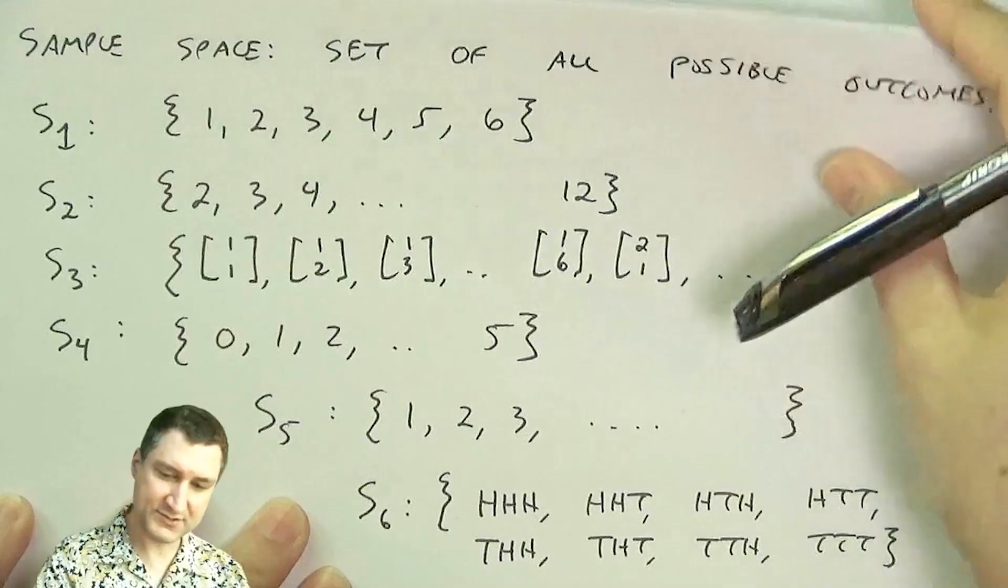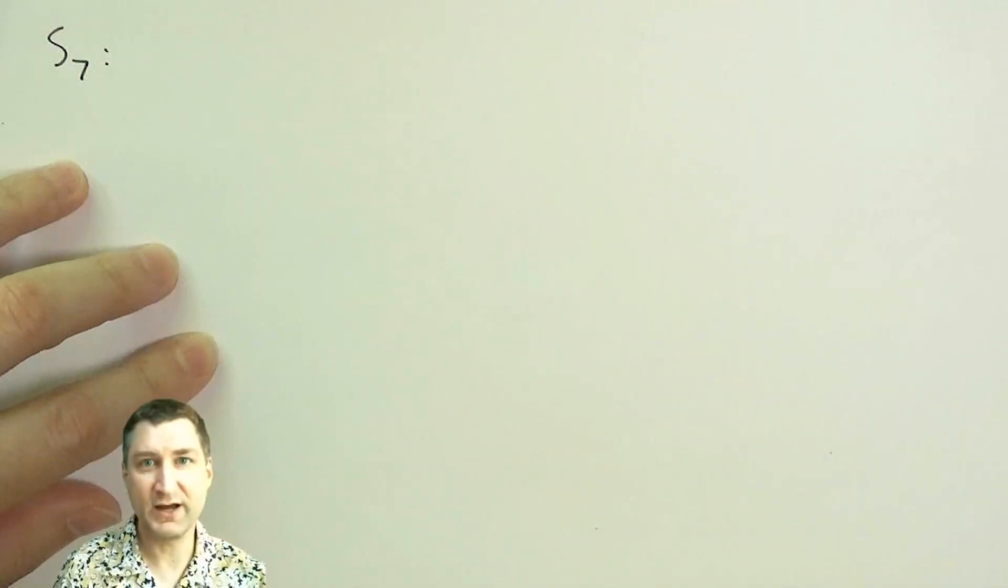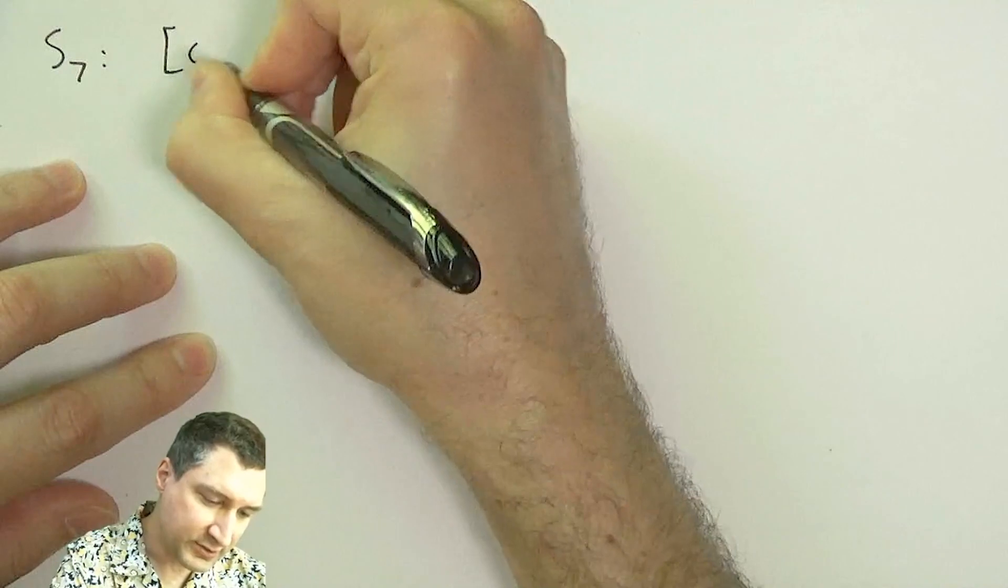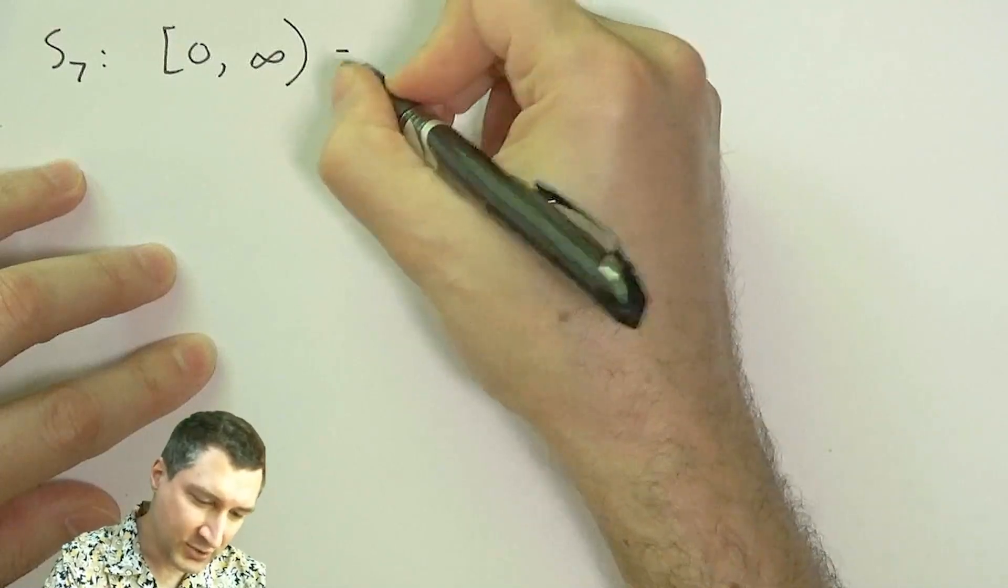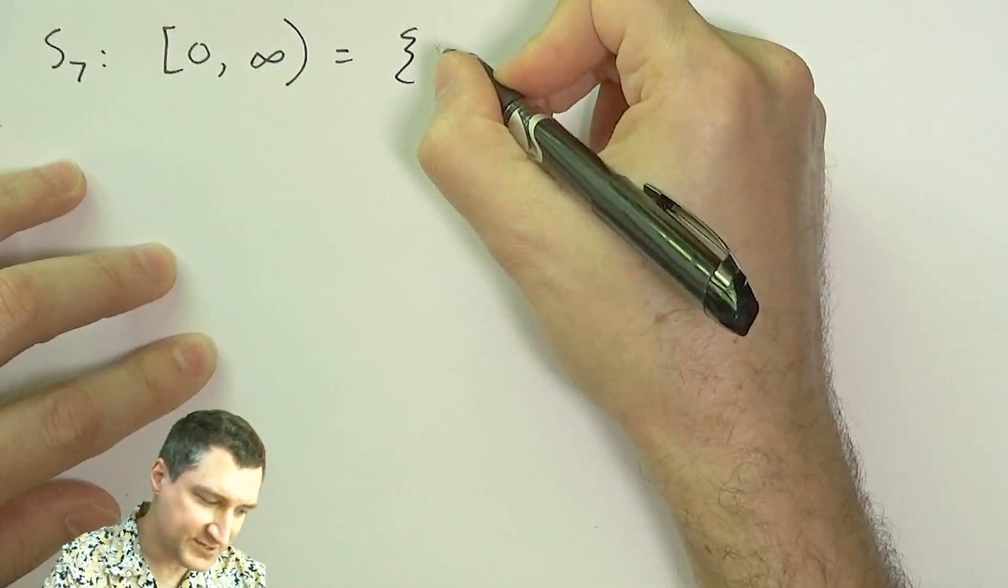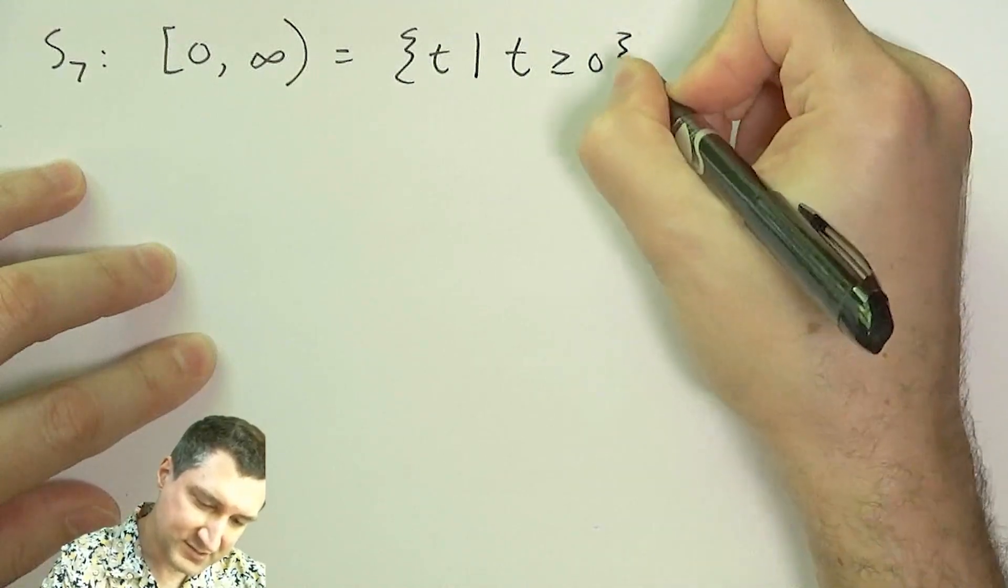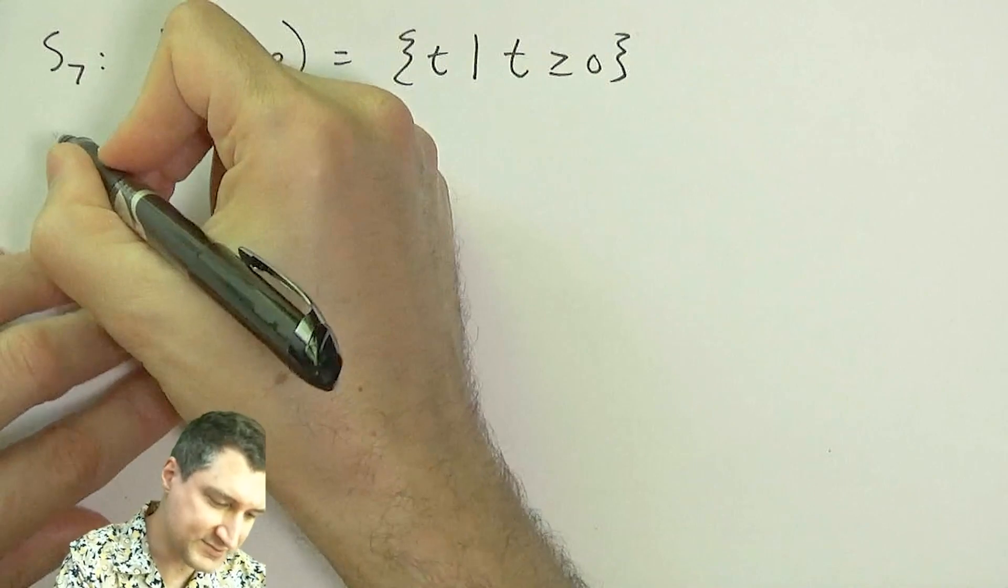And if we look at the continuous experiments we talked about, so the sample space for experiment seven, the lifetime of my hard drive, well, it could be as low as zero, right? It fails the day that I bought it, or it could last forever, the mythical, amazing hard drive, right? So a different way of writing this in set notation is it's the set of T such that T is at least zero, right? So this is a continuous sample space, right? Continuous set of outcomes.